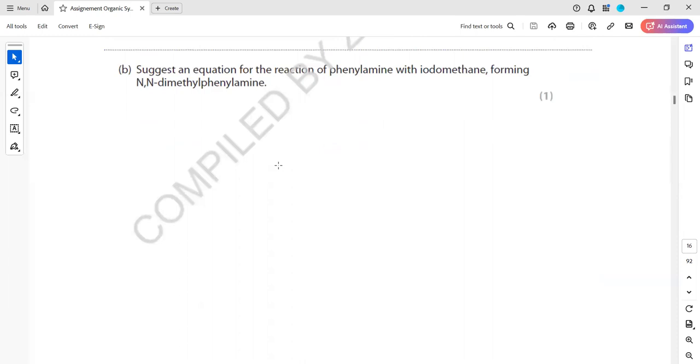Suggest the equation for the reaction of phenylamide with iodomethane forming N,N-dimethylphenylamide. So phenylamide with iodomethane. We just need an equation. So phenylamide is C6H5NH2. This is phenylamide reacting with iodomethane. So meth means CH3I and forming N,N-dimethylphenylamide. So C6H5, because phenyl is there, means benzene ring, C6H5 will be there. And N,N means with nitrogen, two methyl groups are there. But we don't have to draw the structure. We have to just show as a compound, the formula. So N is attached with CH3, two of them.